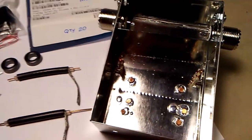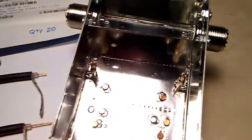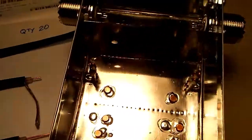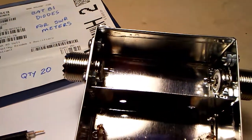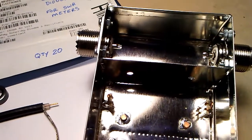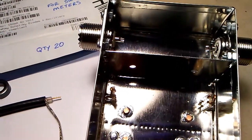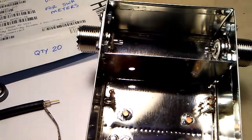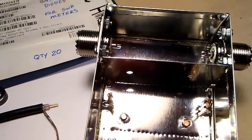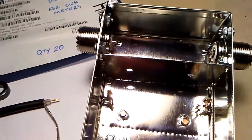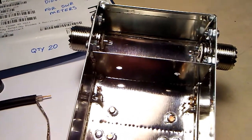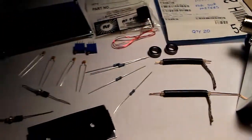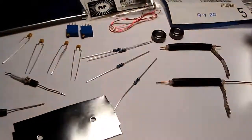I have the Manhattan pads soldered into the enclosure now, and I have the terminal strips and the RF connectors. Then one of the baffles is tacked in. I'm not going to solder it in permanently. I want to see if there's any problem getting components in there with that in the way. If there is, I'll pull it out and then solder it back in. So I have all the components ready to go.